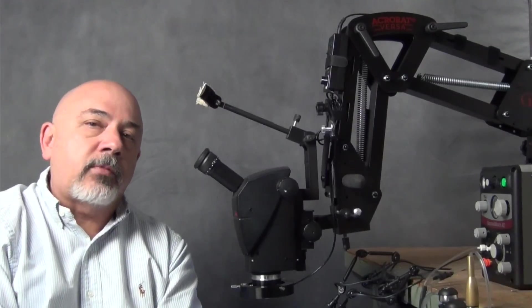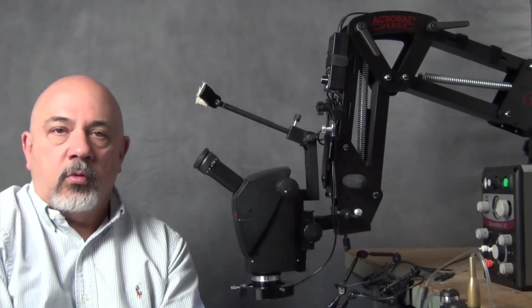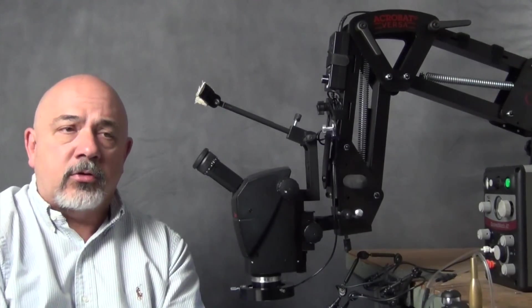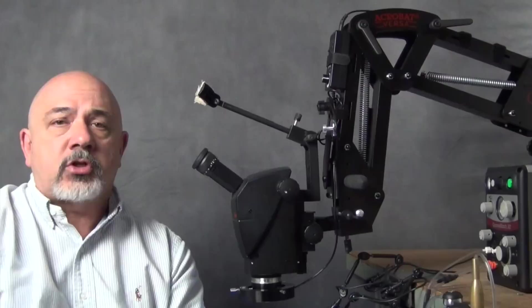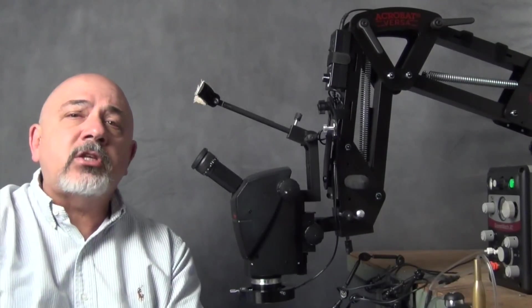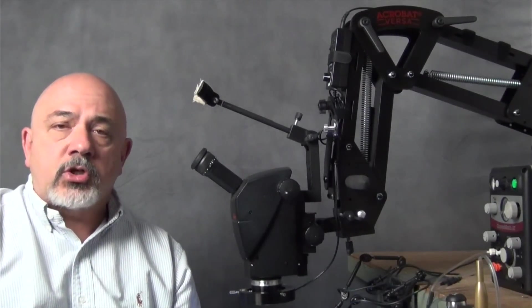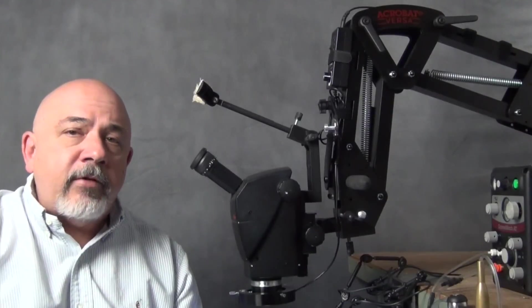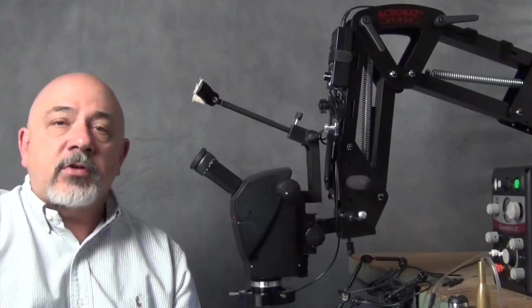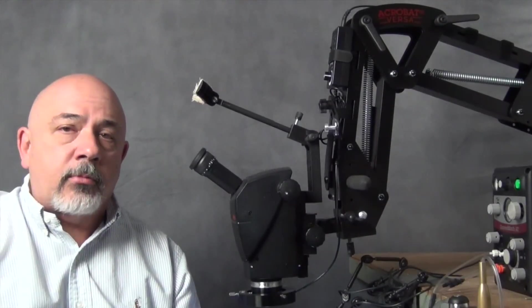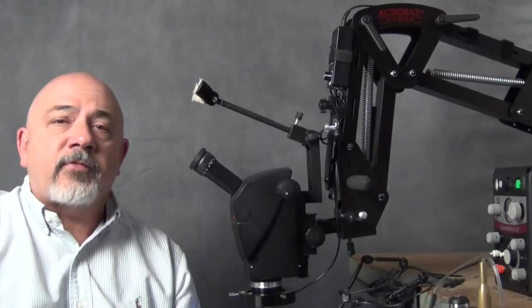Leica's engineers have come out with something they call fusion optics, which has increased the depth of field two to three times what a conventional microscope has. This is huge. It means more of the article stays in sharp focus so you don't have to stop and refocus frequently. I've never seen anything like this in any other microscope ever. It is fantastic.